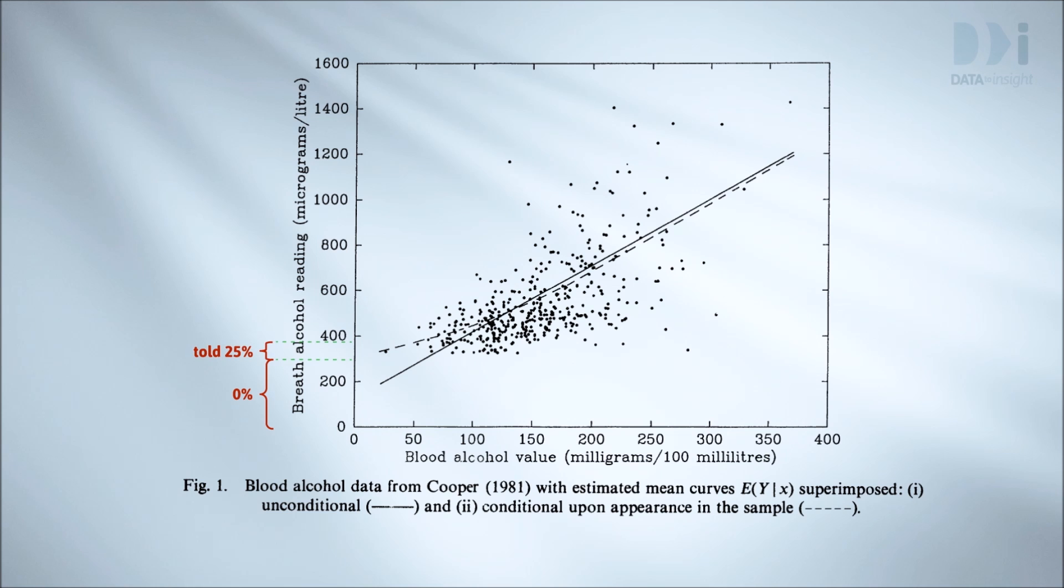25% of those with borderline readings between 325 and 375 had to have a blood test. Above 375 they were over the limit unless they chose to have a blood test and their blood test showed them to be under the limit.